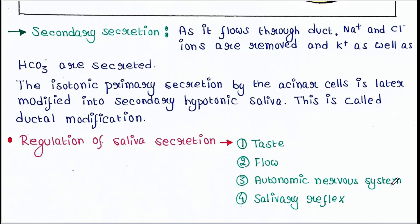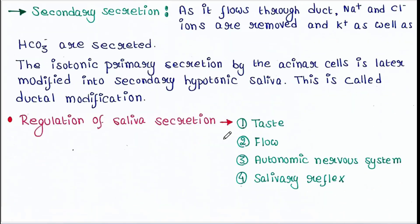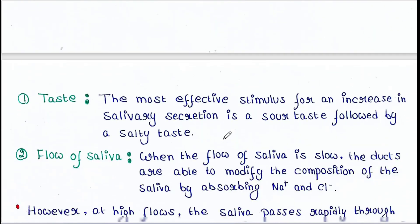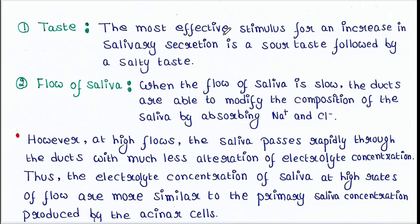Now let's talk about the regulation of saliva secretion. Regulation involves taste, flow, the autonomic nervous system, and the salivary reflex. Regarding taste: the most effective stimulus for increased salivary secretion is a sour taste, followed by a salty taste.